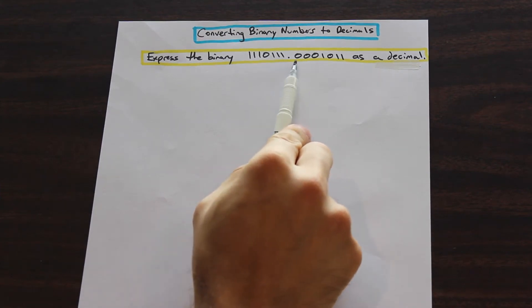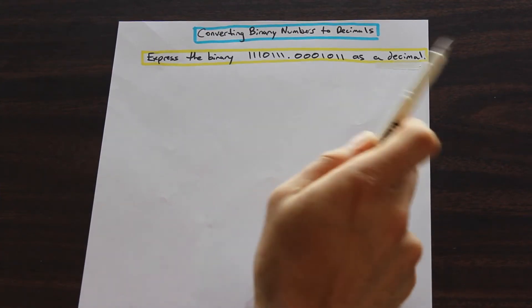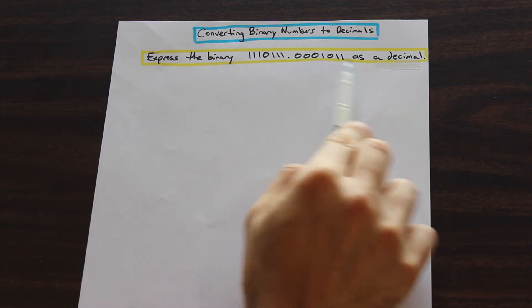So we have the binary number here, 1110111.00001011, and we are asked to express this binary number as a decimal.